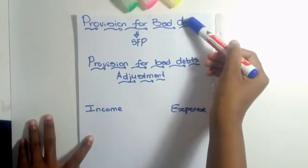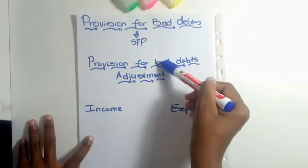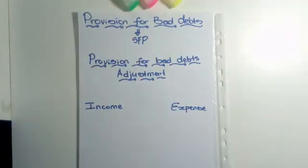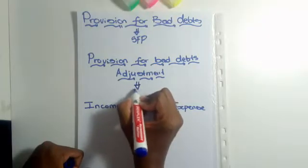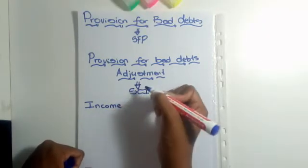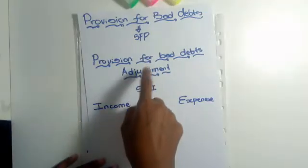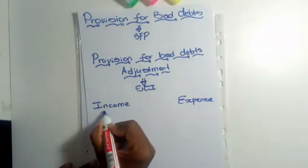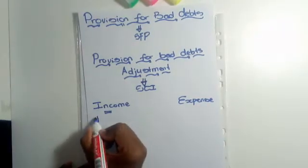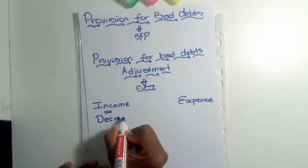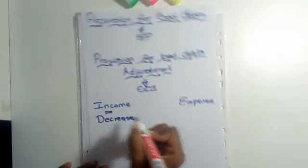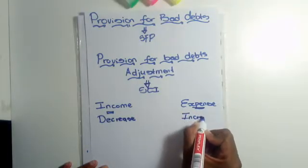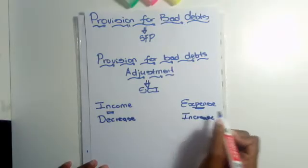There's a big difference between provision for bad debts and provision for bad debts adjustment. Provision for bad debts is recorded in the Statement of Financial Position, whereas provision for bad debts adjustment goes in the Statement of Comprehensive Income. The adjustment can either be recorded as income or as an expense. We only record it as income if we have to decrease the provision, and only as an expense if we have to increase it.